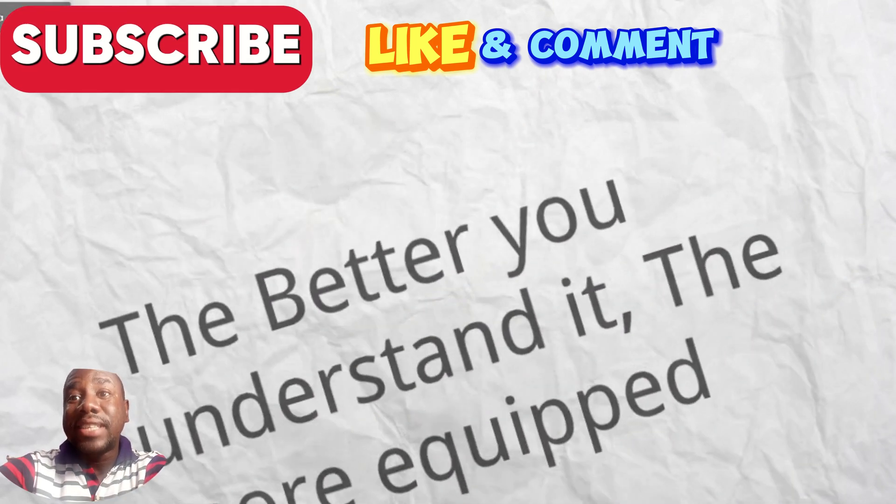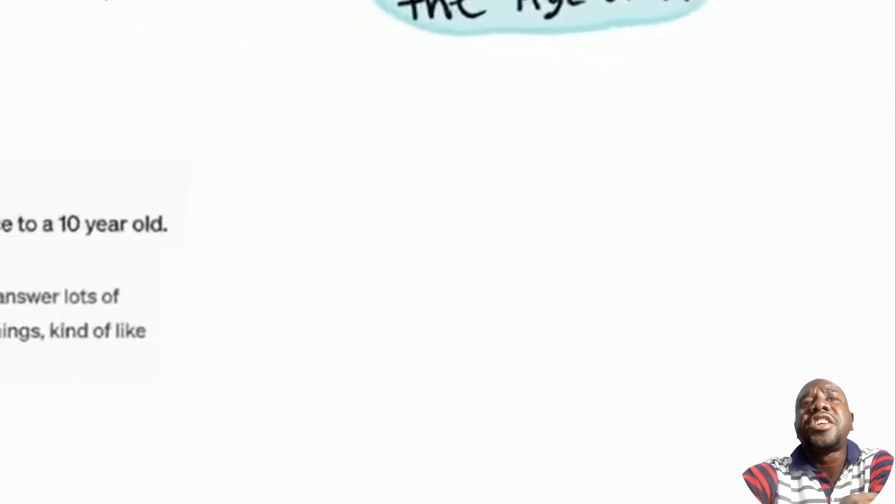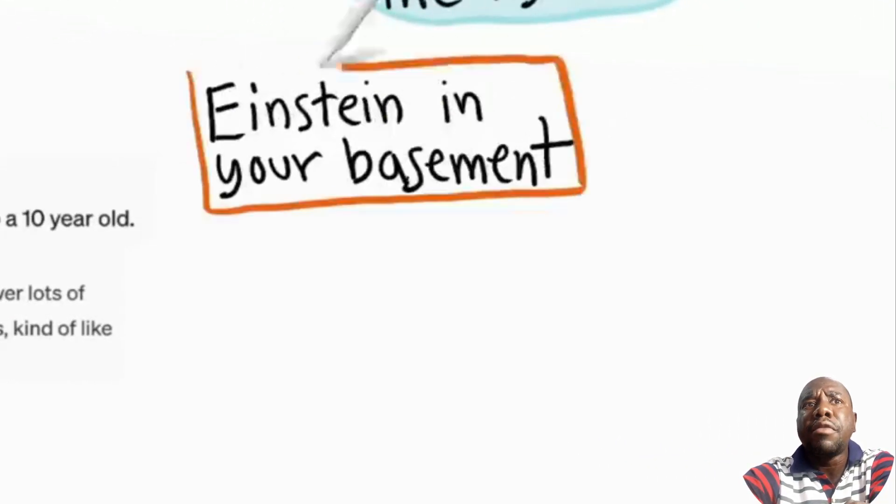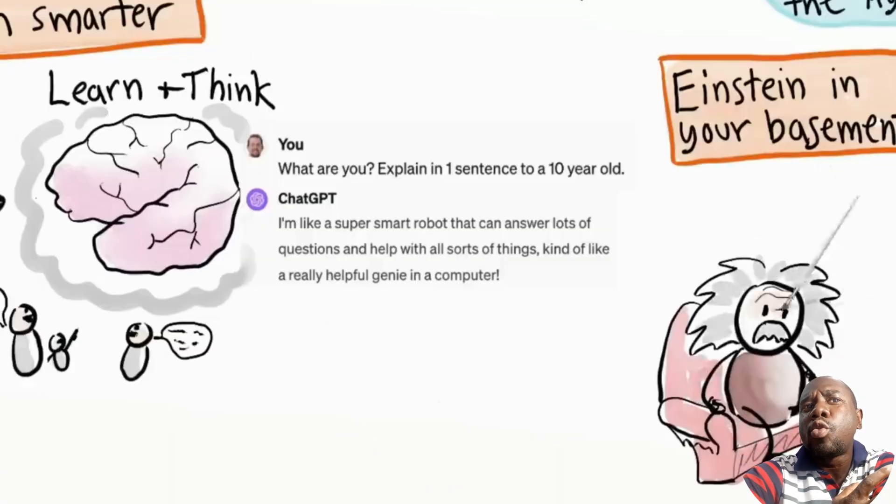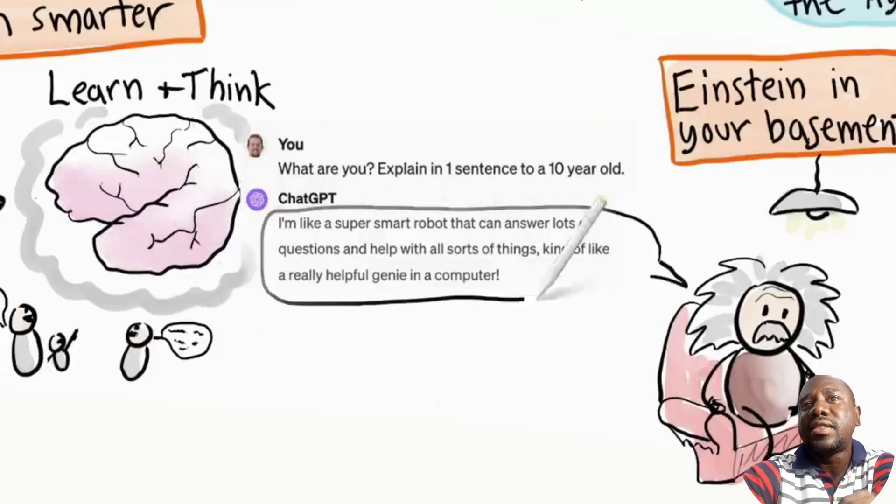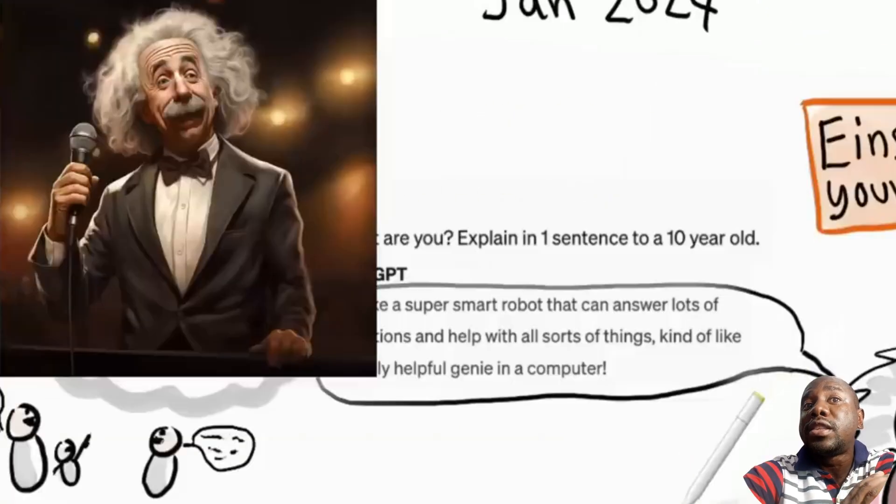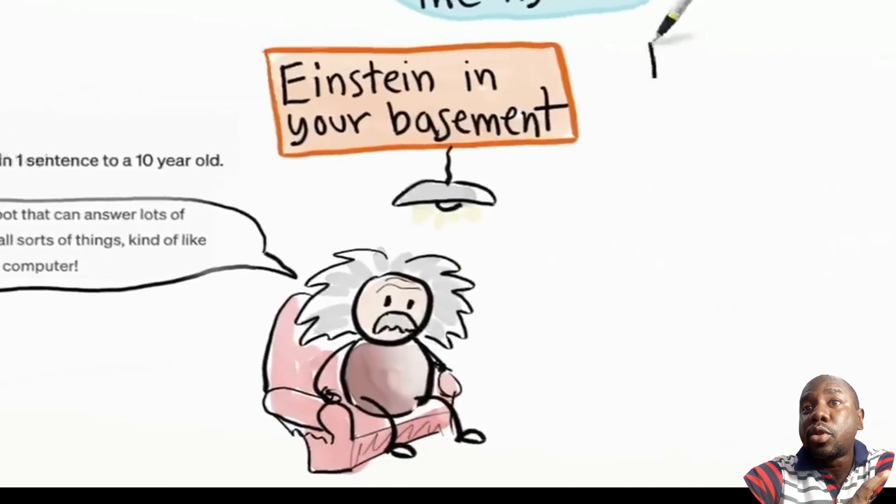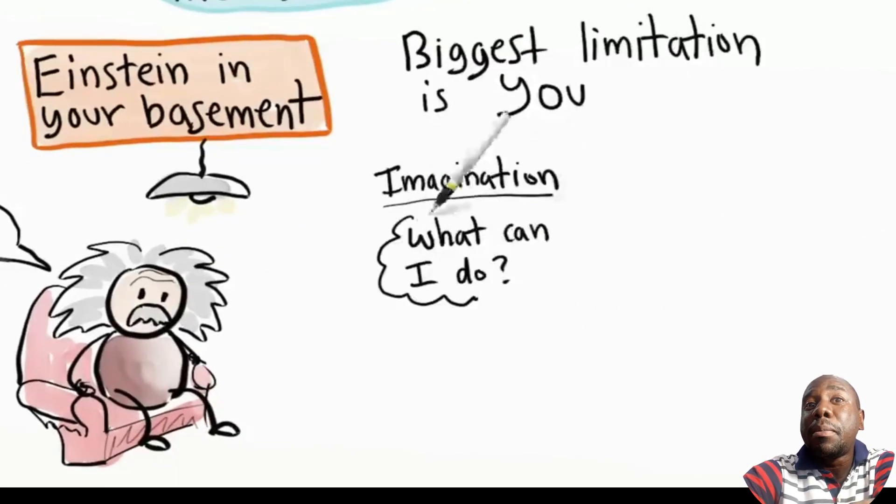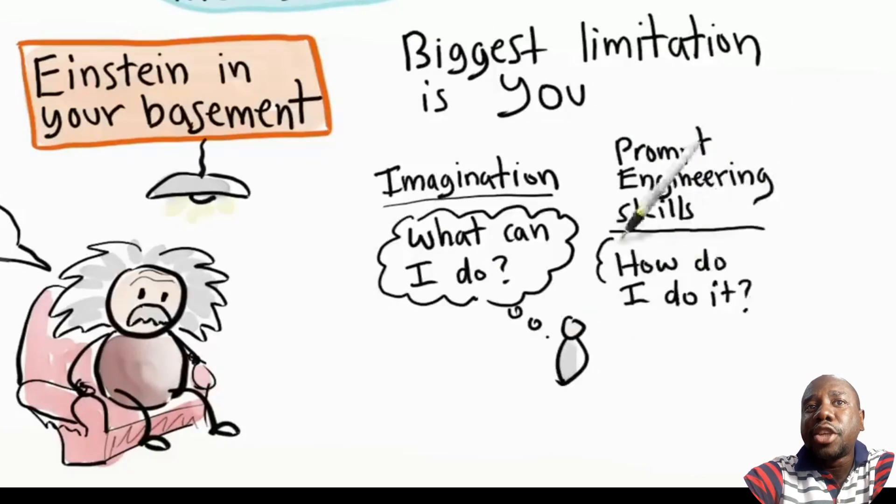A useful mental model: imagine you have Einstein in your basement. In fact, everyone does. By Einstein, I mean the combination of every smart person who ever lived. You can talk to Einstein whenever you want. He has instant access to the sum of all human knowledge and will answer anything within seconds, never running out of patience. He can also take on any role you want: comedian, poet, doctor, coach, expert within that field. He has some human-like limitations though. He can make mistakes, jump to conclusions, misunderstand.